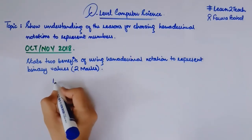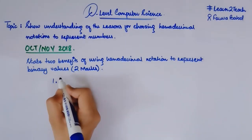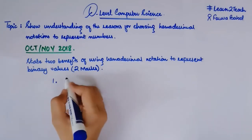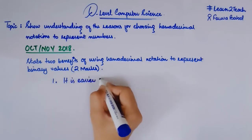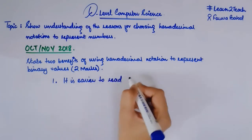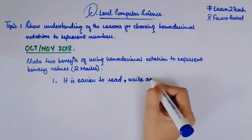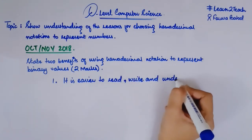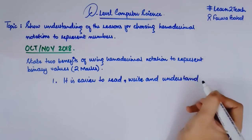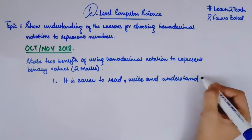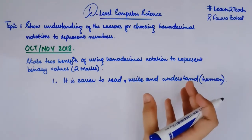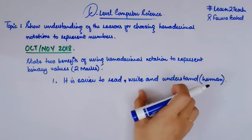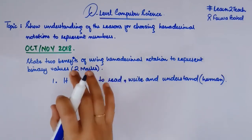You have a 2-mark question so you need to write 2 of those points. We will be discussing all of the possible answers and you need to write only 2 points out of them. The very first thing already mentioned is that it is easier to read, write, and understand for humans. That's why we use hexadecimal notation — it is easier to read, write, and understand for humans. You need to mention 'human' here because it is not a big deal for a machine.